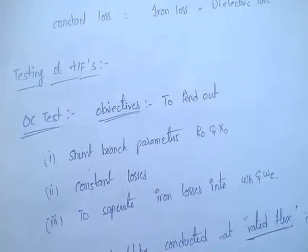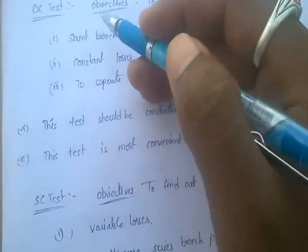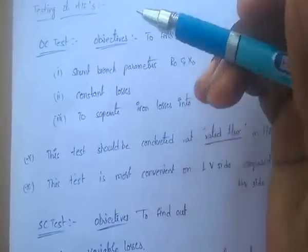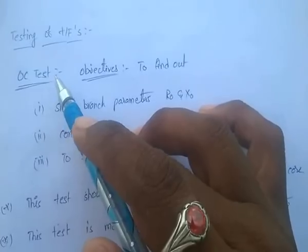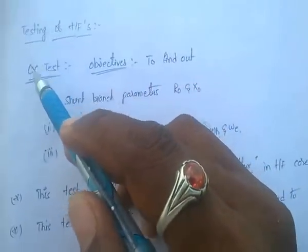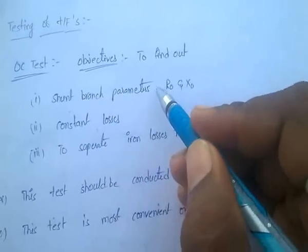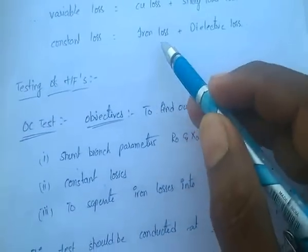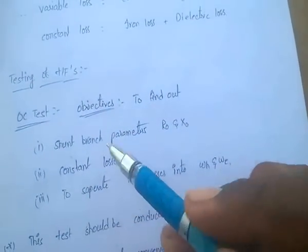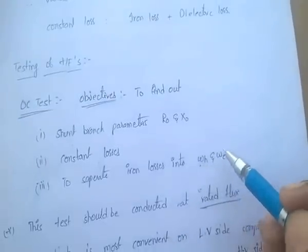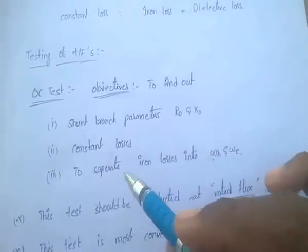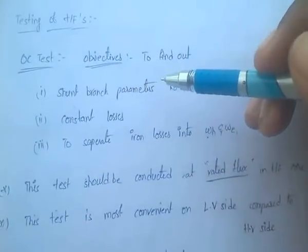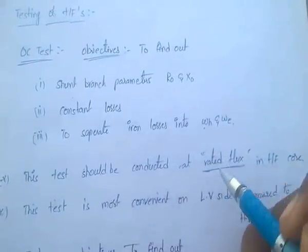Testing of transformers: OC test and SC test are conducted to find out the losses and performance of the transformer. The open circuit (OC) test objectives are: to find out the shunt branch parameters R0 and X0, to find out the constant losses (iron losses plus dielectric losses), and to separate iron losses into hysteresis losses (Wh) and eddy current losses (We). The OC test should be conducted at rated flux in the transformer core.